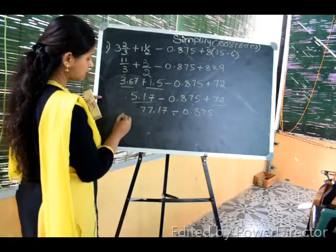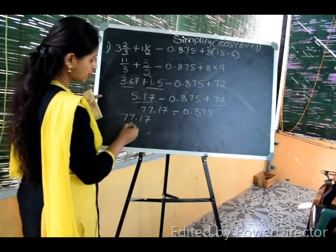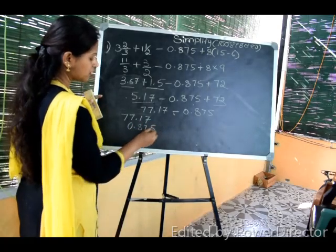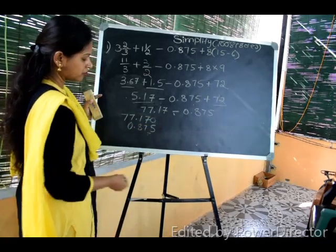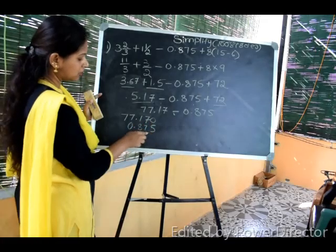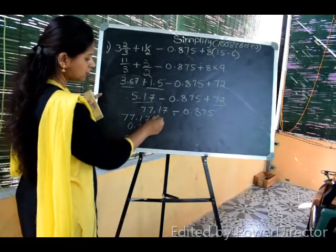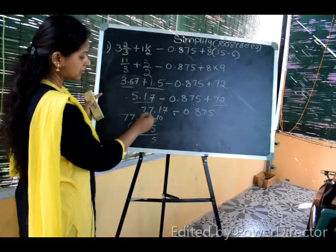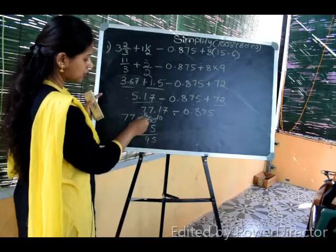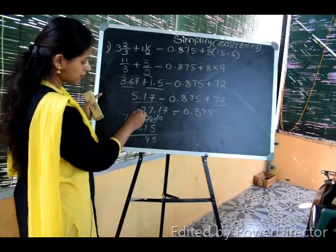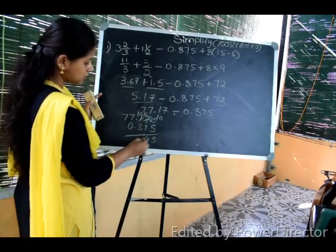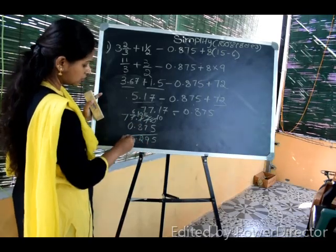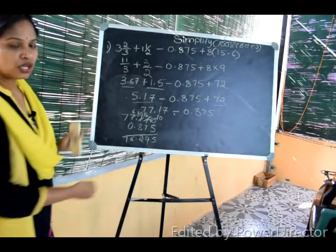77.17 minus 0.875. So now we add this again, 0 to the 0.17. If you want to add, 16 minus 7 is 9, then you want to add 10 to 10. So 10 minus 8 is 2, 6. So the answer is 76.295.